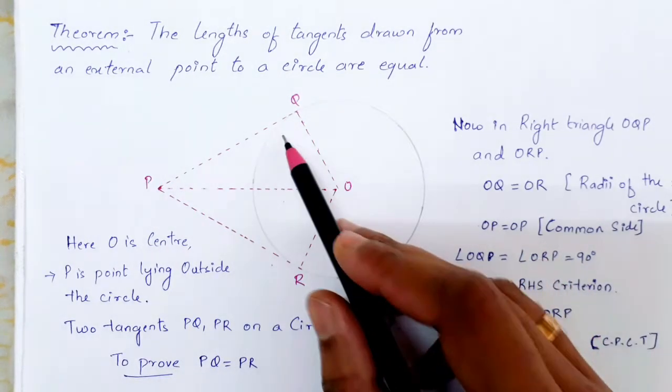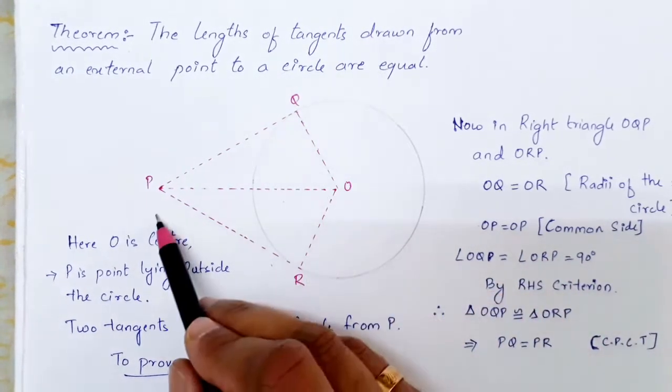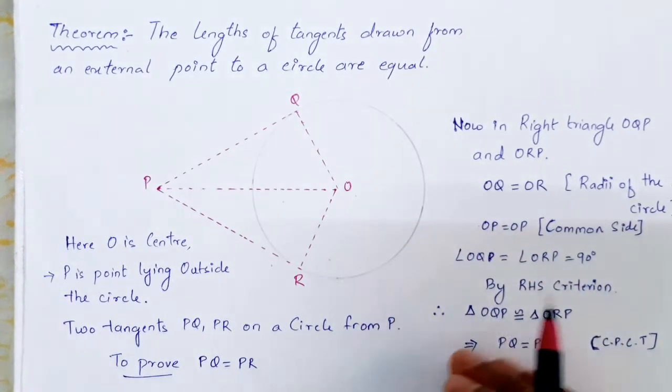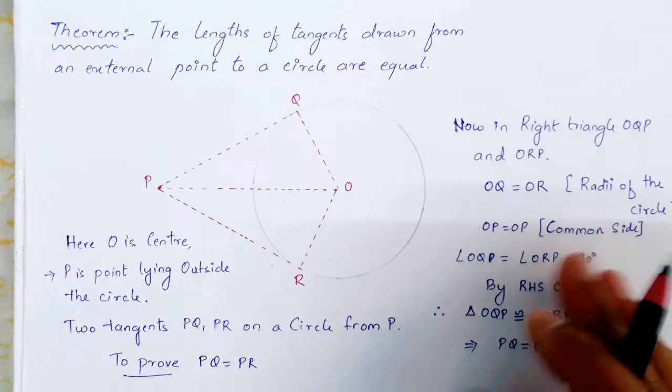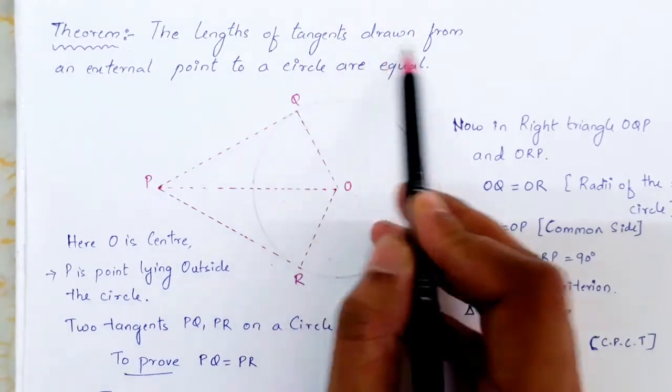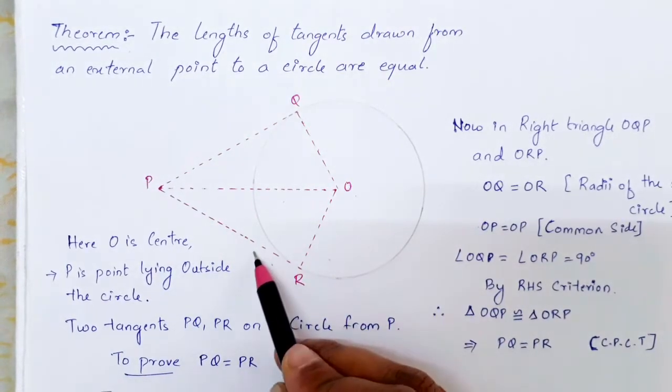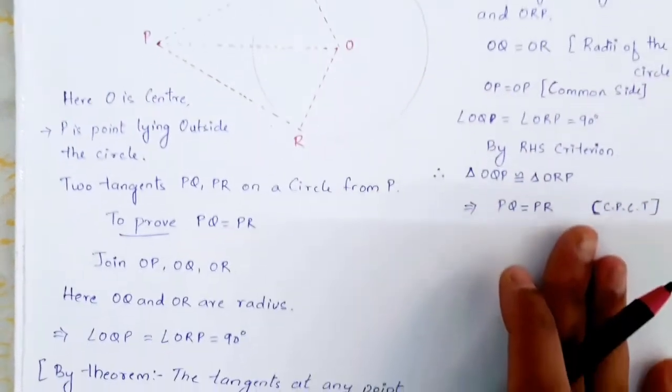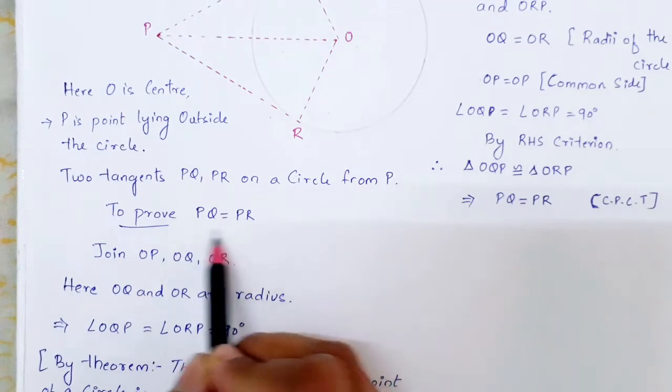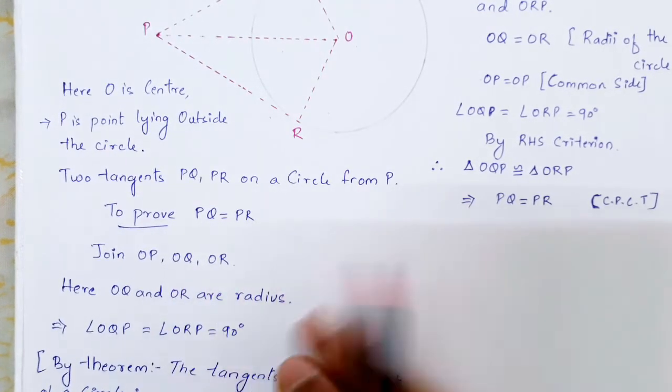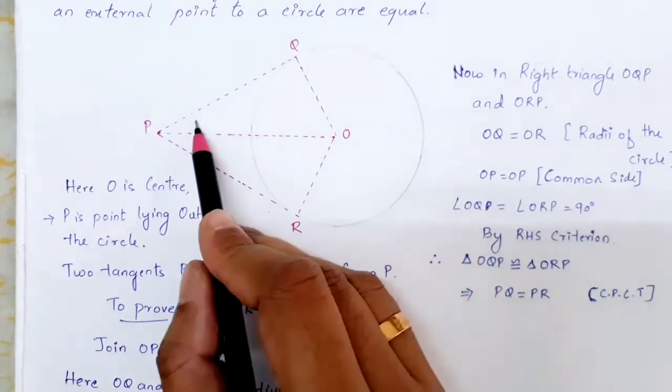Here I have joined OQ, OR, and OP, where OQ and OR are radii of the circle. Now we have to show that the length of tangents drawn from external point, meaning PQ and PR, are equal. So we have to prove PQ is equal to PR.